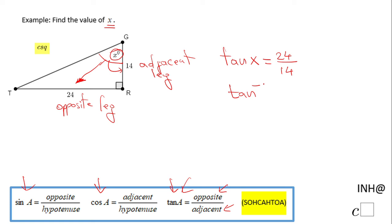And this function is going to tell us the angle for which the tangent is 24 over 14, and that angle is an angle that has the measure of 59.74 degrees. I rounded to the nearest hundredth.